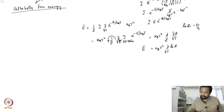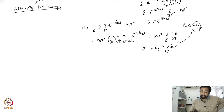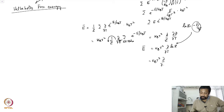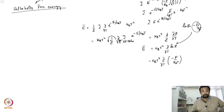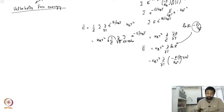Since ln Z = -F/(kBT), we can substitute: E-bar = kBT² × ∂/∂T of [-F/(kBT)]. We must be careful here because there will be two terms — F is also a function of T, and there is a 1/T factor in the denominator. F is a function of T, V, and N.